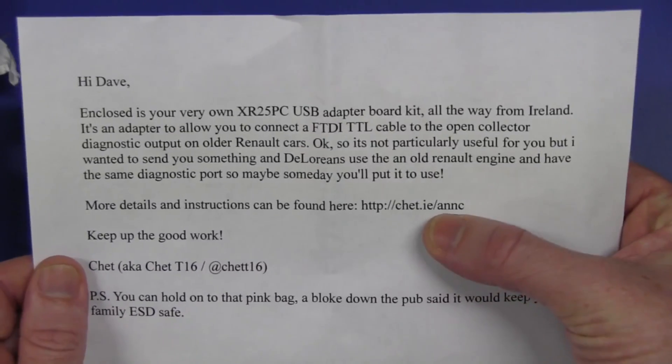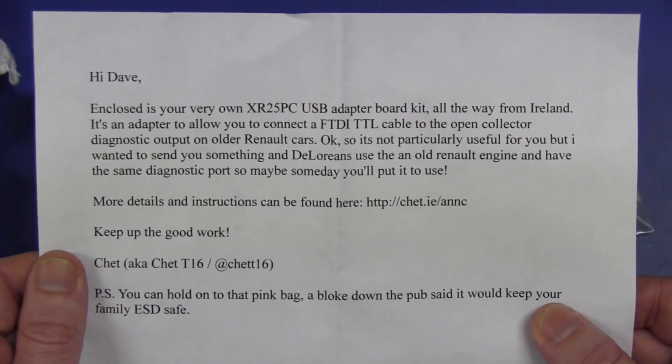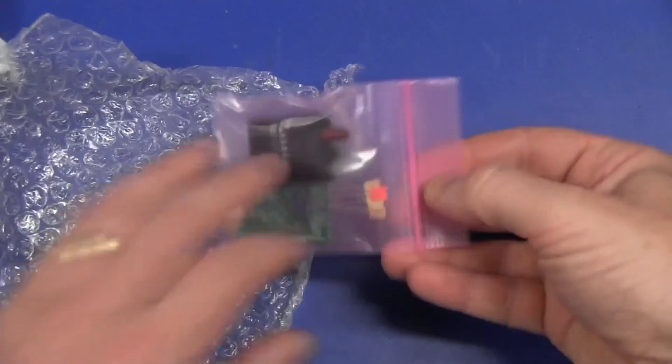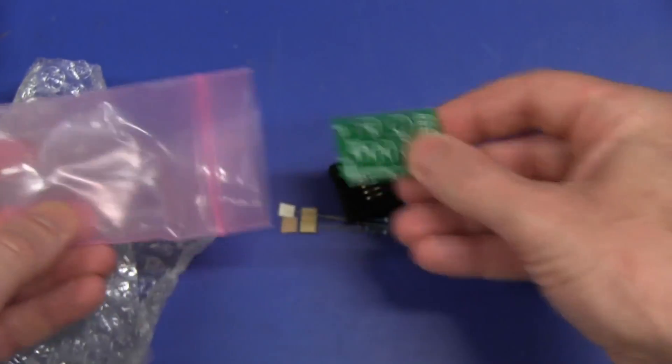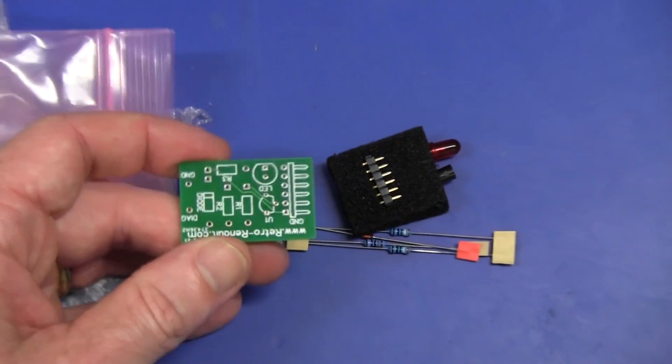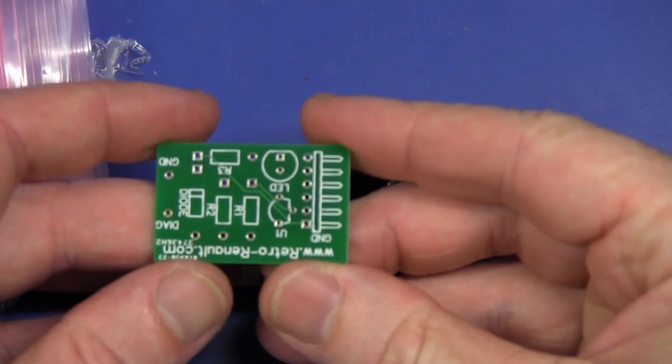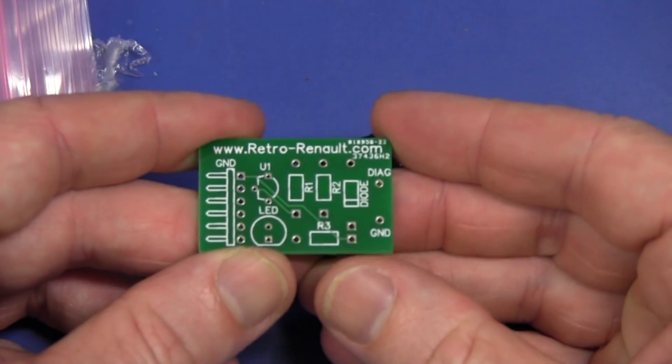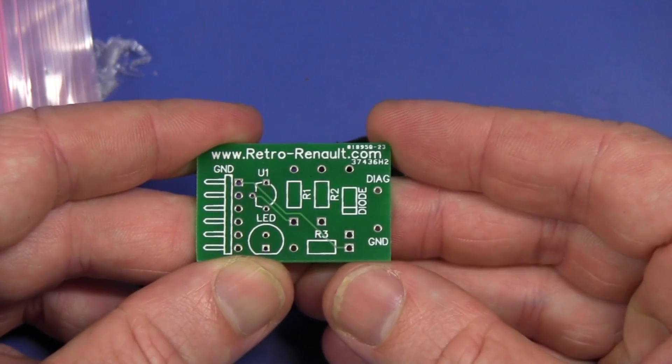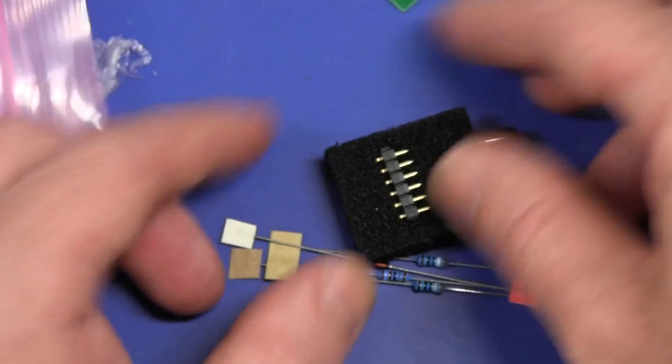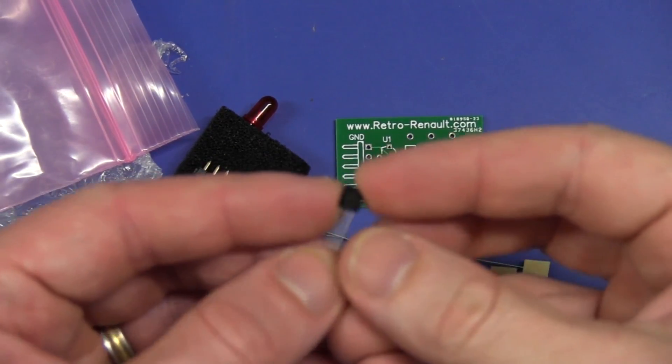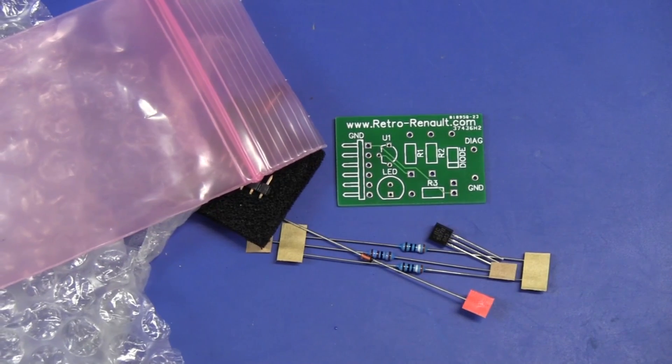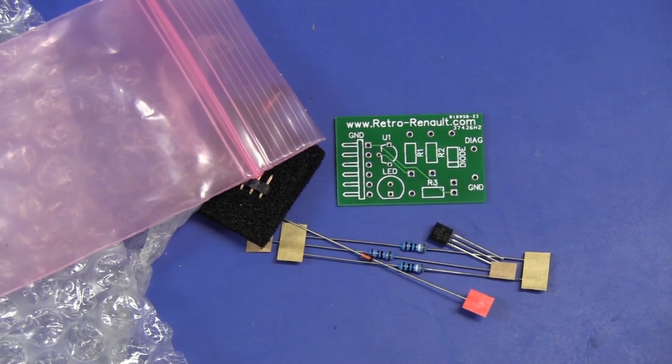More details and instructions can be found here at Chet. He's got his own website with the dot IE address in Ireland. So check it out. Beautiful. And let's check it out. What have we got here? Pink ESD bag. We've got some components. And that's it. Not much on it. It's not even a micro. This is an LU1. RetroReno.com Diagnostic ground diode. That's it. Geez, you don't need much to hook up to a Retro Reno. And it's just a BC557. There you go. So thank you very much Chet. And if you're into Retro Renos I guess you should check out RetroReno.com.